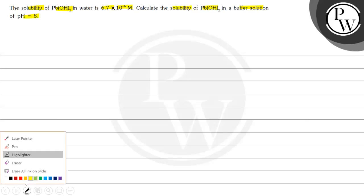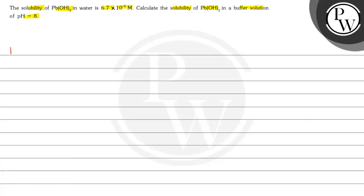We will start our solution with the key concept. Pb(OH)₂ dissociates into Pb²⁺ plus 2OH⁻. We let the molar solubility of Pb²⁺ be S, so the solubility of Pb(OH)₂ is also S, and for OH⁻ this will be 2S.